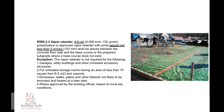R-506.2.3, Vapor Retarder. A 6 mil (0.006 inch, 152 micron) polyethylene or approved vapor retarder, with joints lapped not less than 6 inches (152 millimeters), shall be placed between the concrete floor slab and the base course, or the prepared subgrade where a base course does not exist. Exception: The vapor retarder is not required for: 1. Garages, utility buildings, and other unheated accessory structures. 2. Unheated storage rooms having an area of less than 70 square feet (6.5 sq m) and carports. 3. Driveways, walks, patios, and other flat work not likely to be enclosed and heated at a later date. 4. Where approved by the building official based on local site conditions.